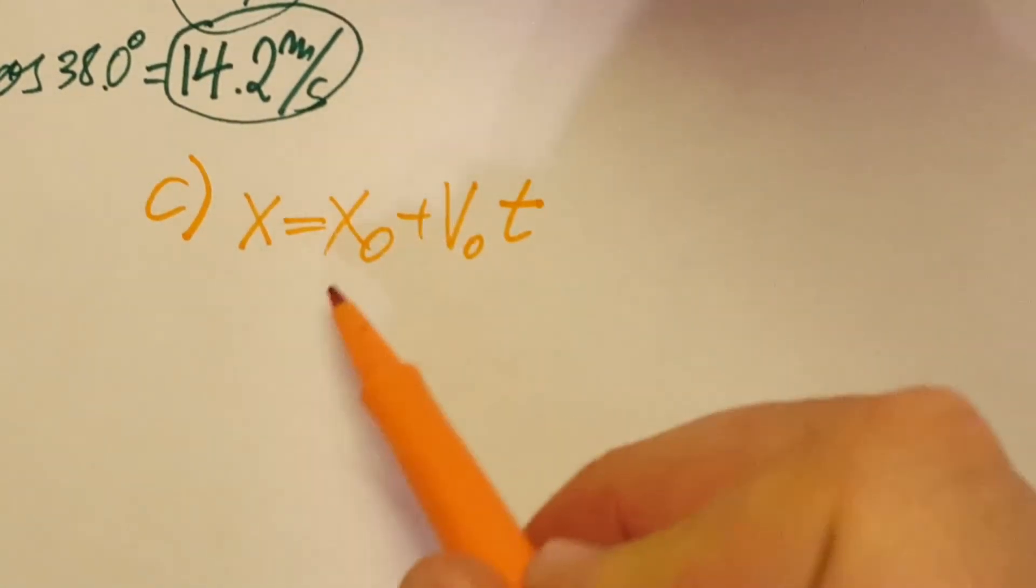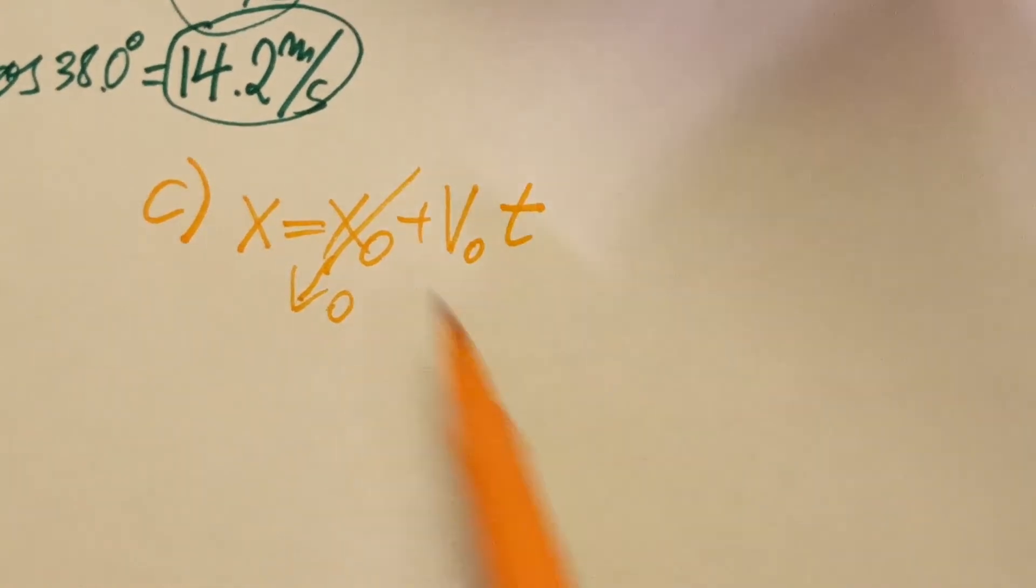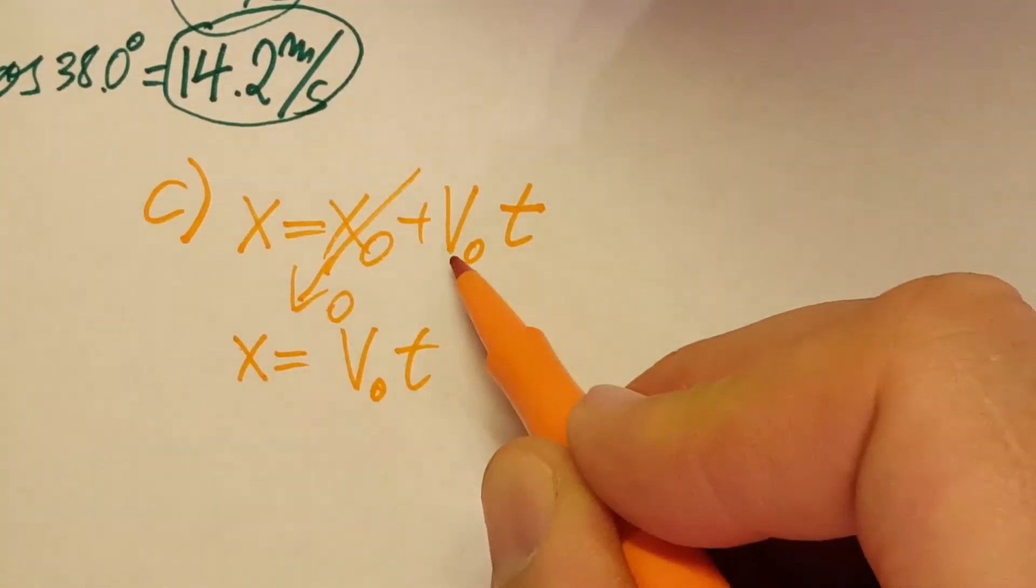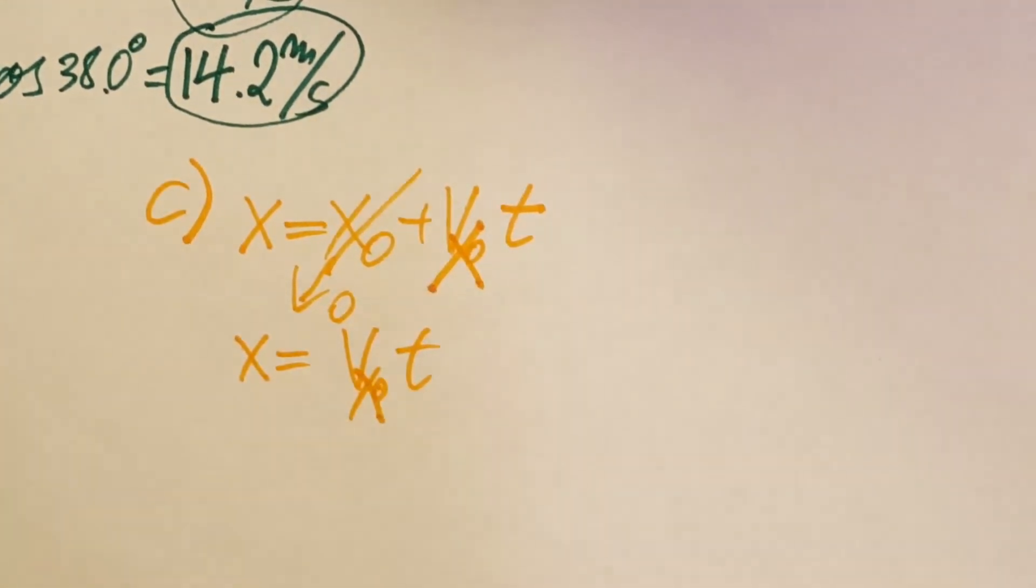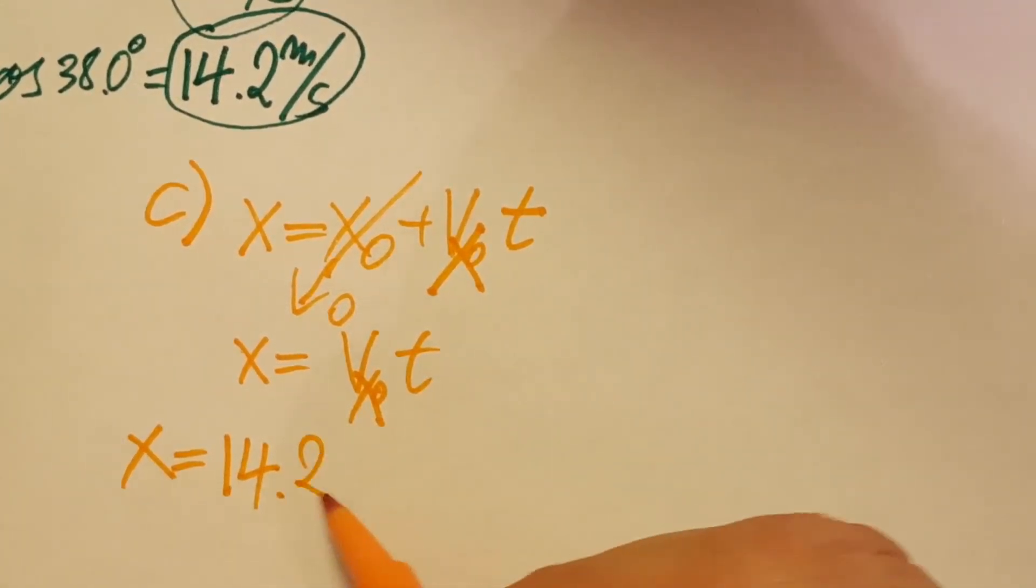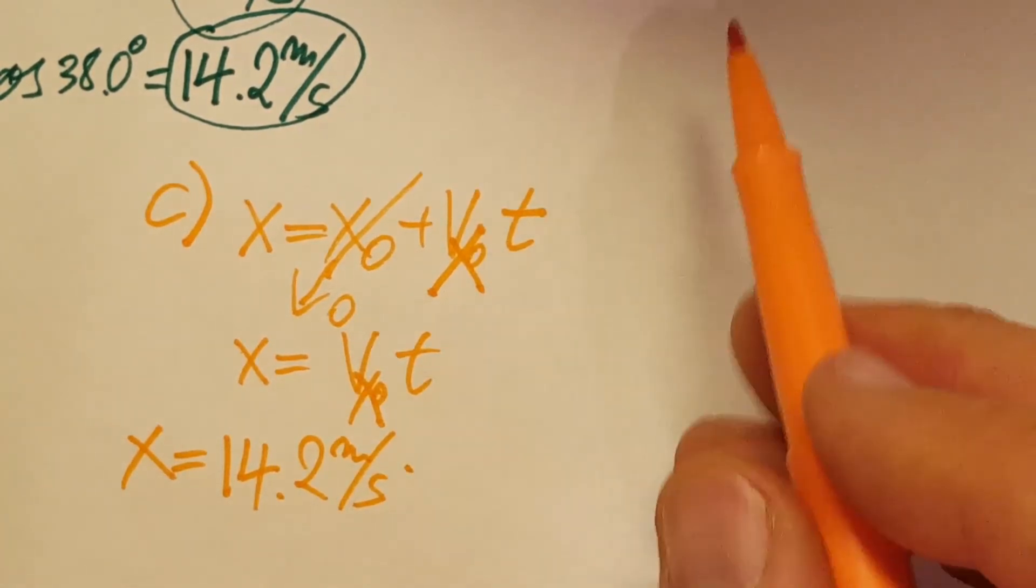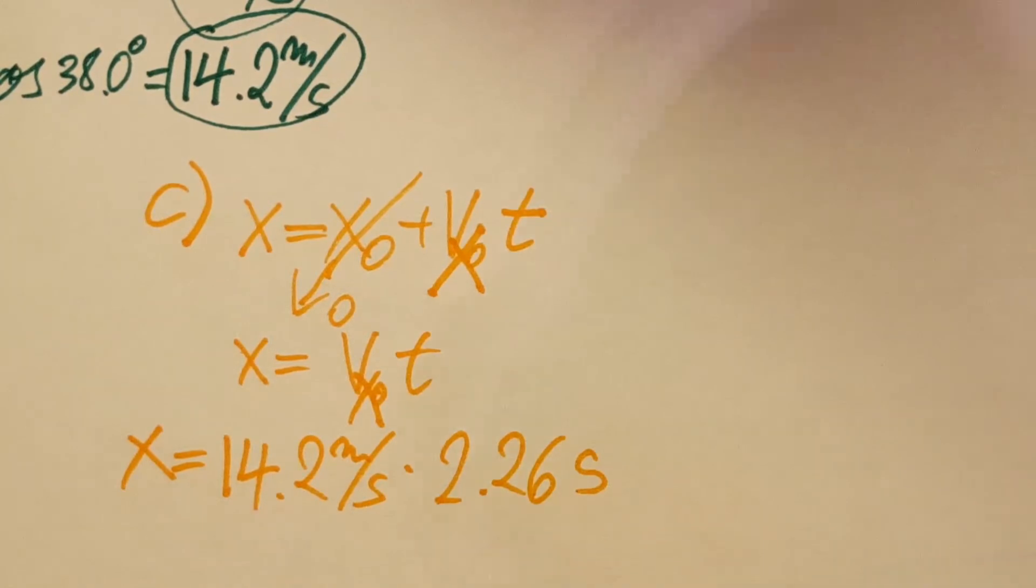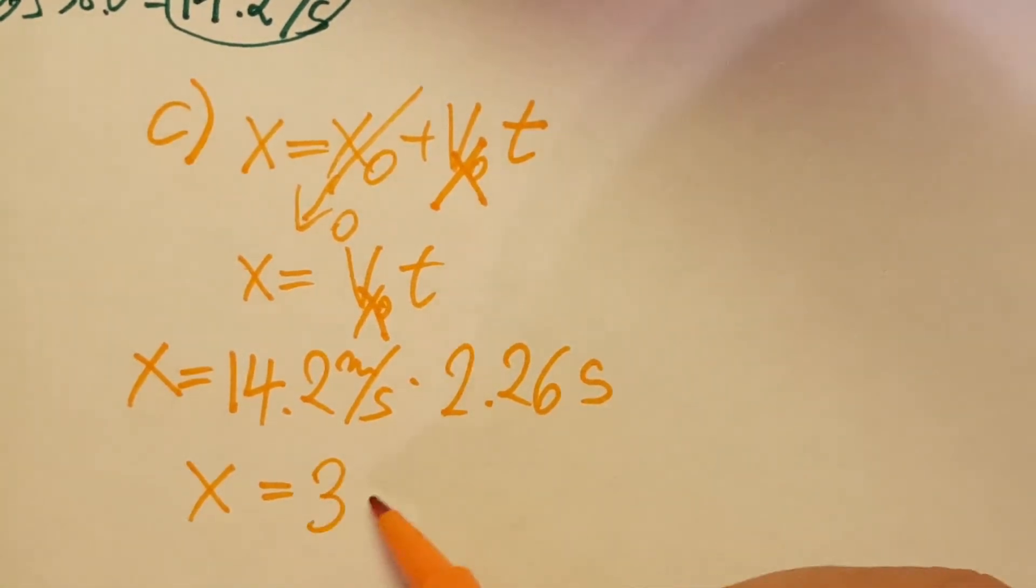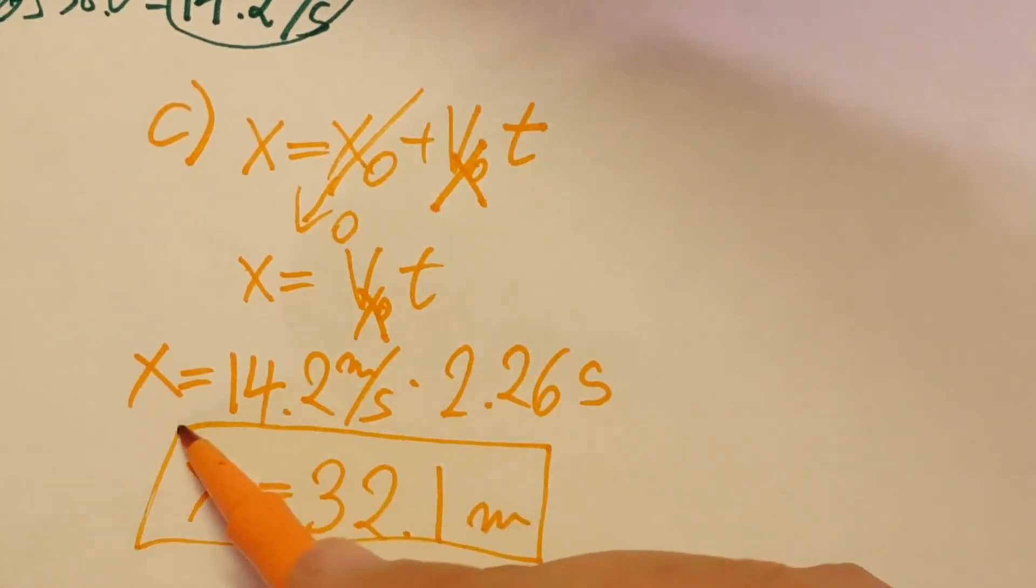This is what we need. This term is zero, x_0 is zero, and x equals v_0·t. Now v_0 we know, t we know, and v_0, just to make sure we don't confuse it, this is v_x_0. Okay, so we need x. Let's start plugging in. x equals v_x_0, we found it to be 14.2 meters per second, times the time we found it to be 2.26 seconds. Calculator times time, and this will give us a value of 32.1 meters. There you go.